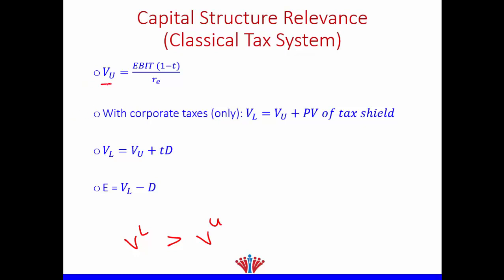Let's start with the formula for the value of an unlevered firm. We assume the firm will continue forever, so we use the present value of a perpetuity. The bottom line of the income statement is net income, so the formula is net income divided by cost of equity.